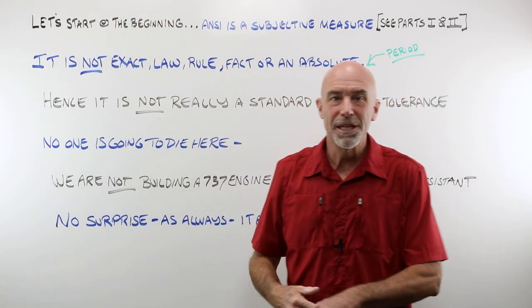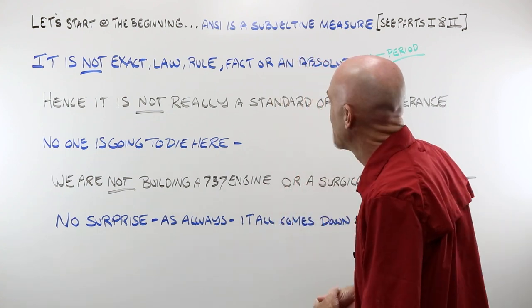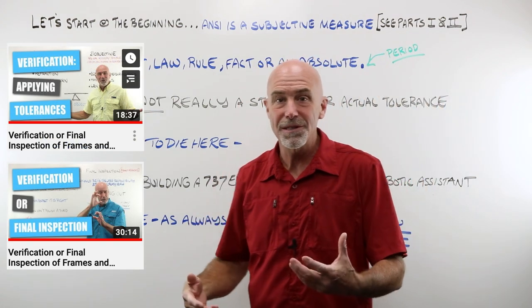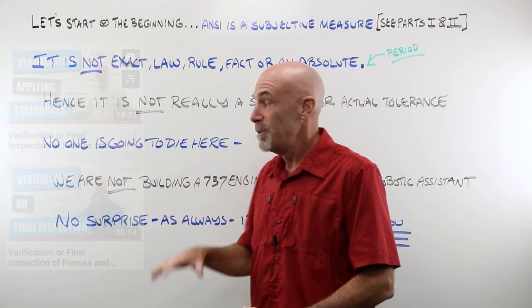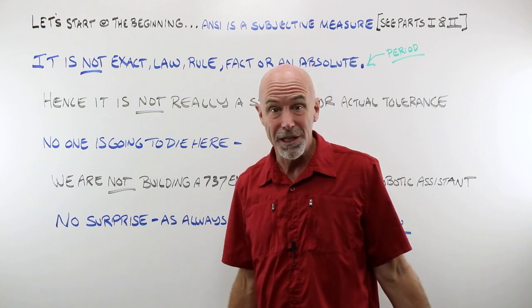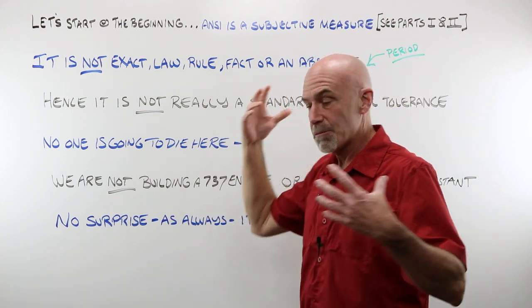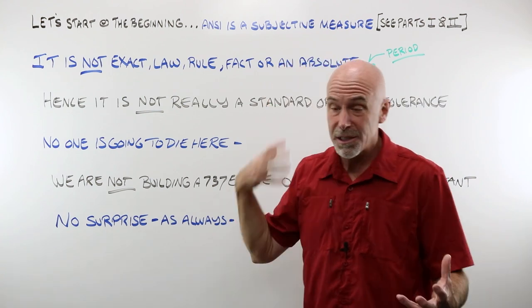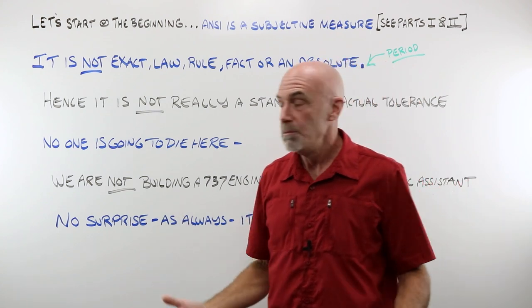Let's start at the beginning, because the beginning is always a good place to start. If you have not already watched part one and part two in this series about verification, final inspection, you simply must do that before you try to watch this one, because if you don't, you're going to have absolutely no idea what's going on. ANSI is a subjective measure, and I'm not going to go through all this again. If you watch parts one and two, you'll understand that there's a difference between a subjective and an objective measure, and a subjective measure is open to human interpretation.